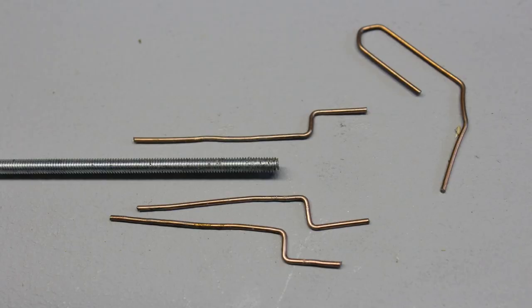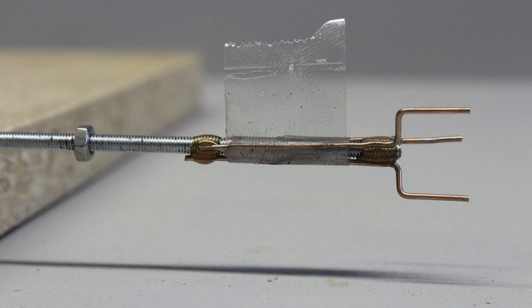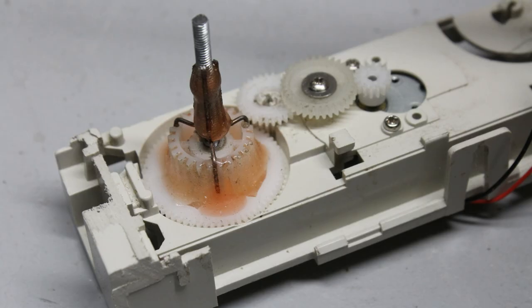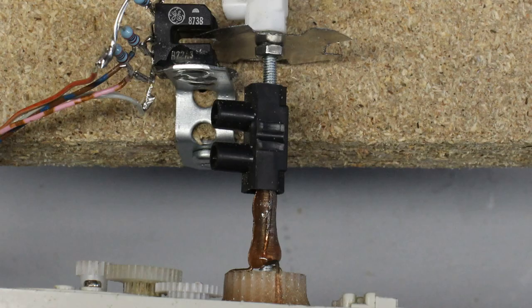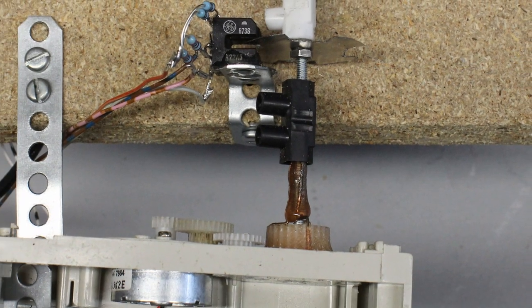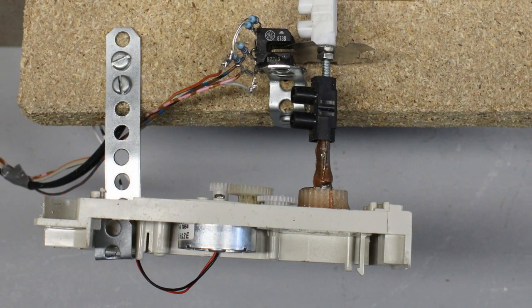The linkage between the motor and the threaded rod is made of a paper clip and some epoxy. A short piece of a 3mm rod is glued on the gear wheel at the output shaft of the drive. The drive is connected to the threaded rod with another screw terminal.